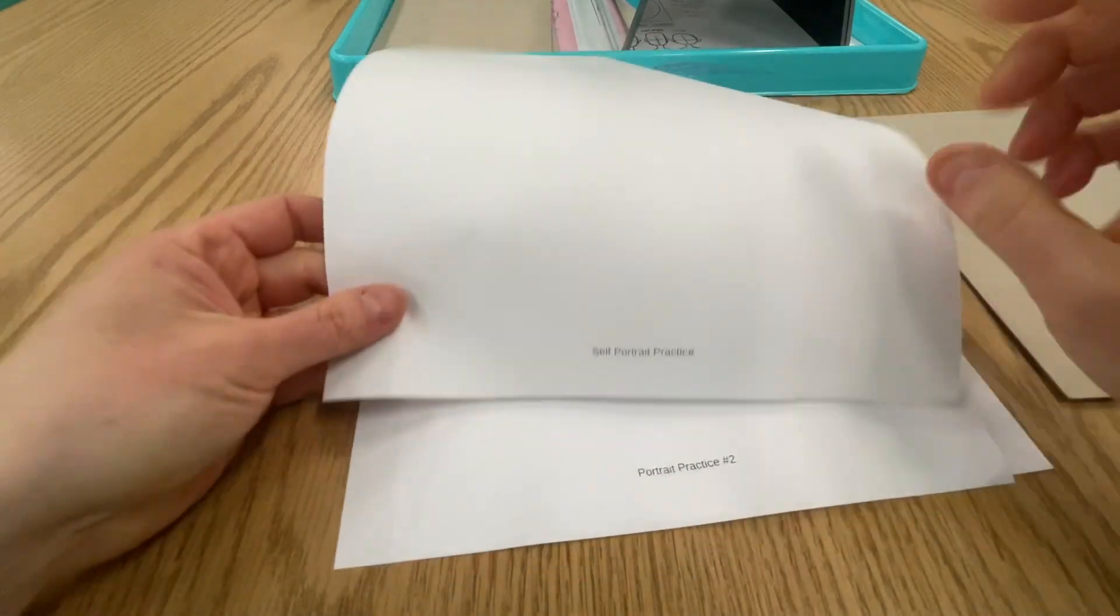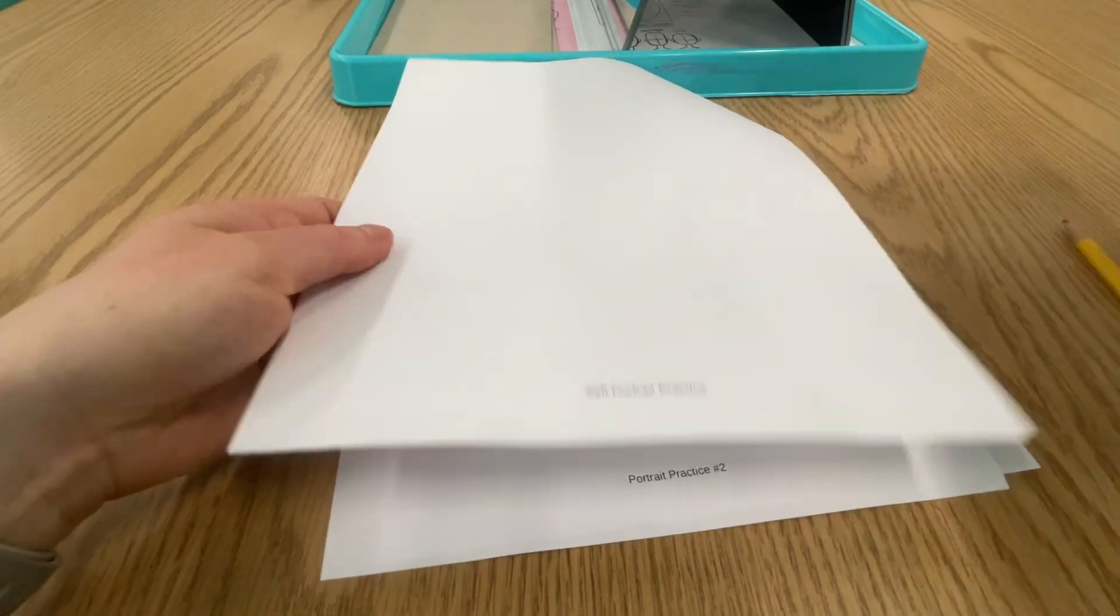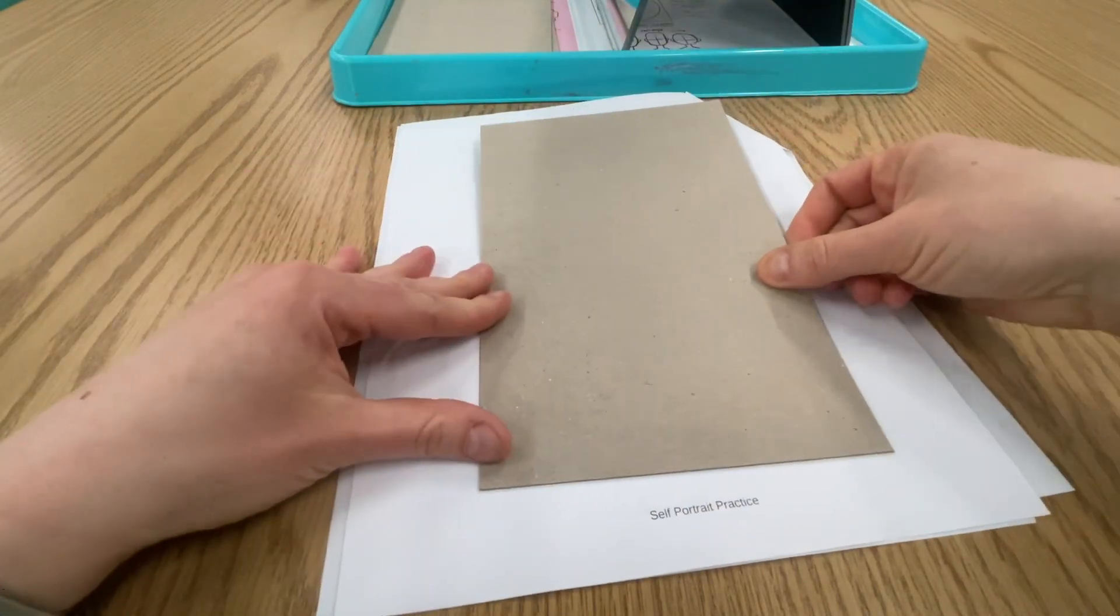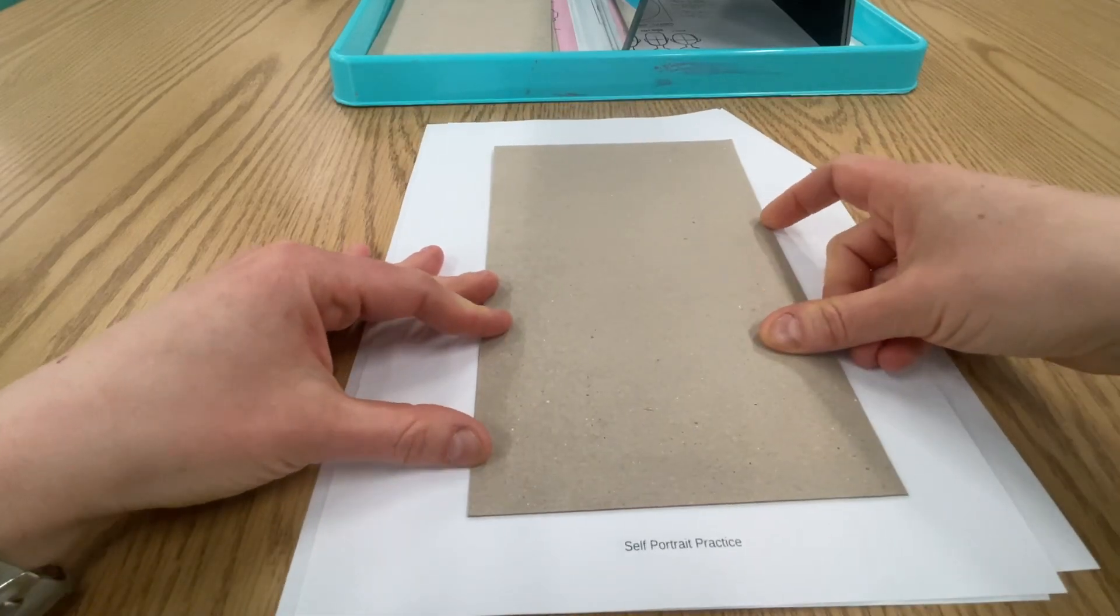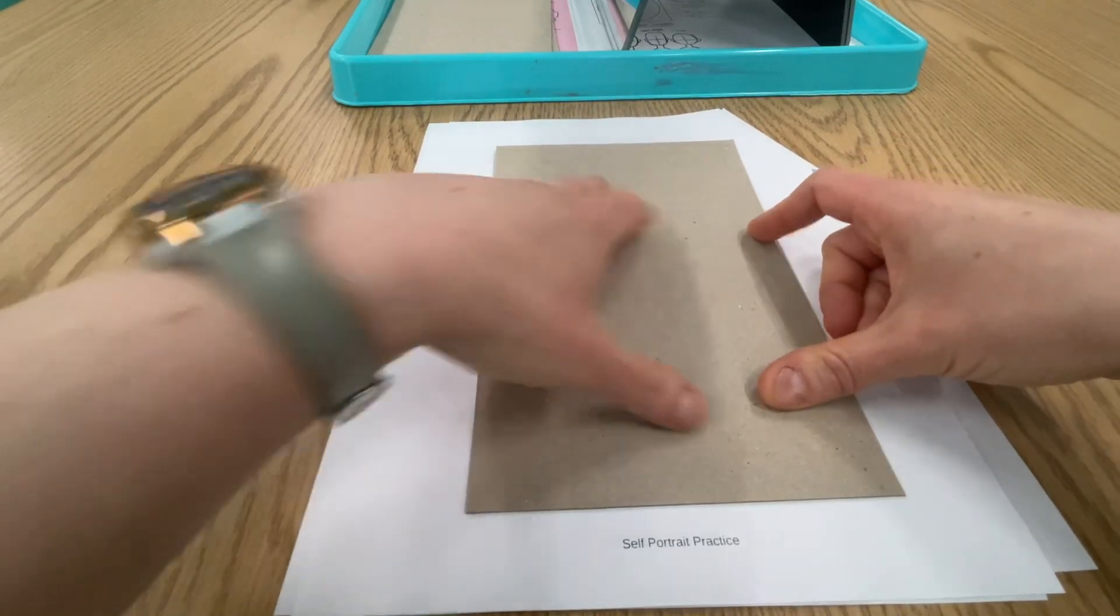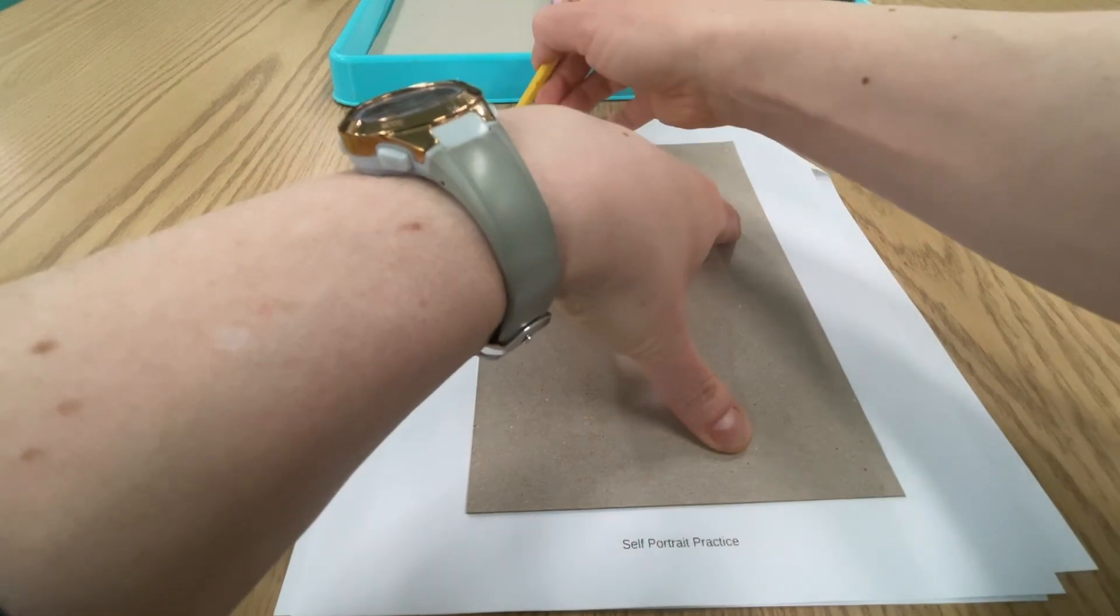Where it says self portrait practice, that's where you're going to put your rectangle down, your stencil, and you are going to trace it. Okay, so hold it steady.